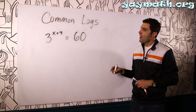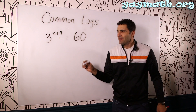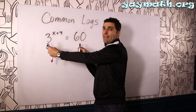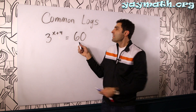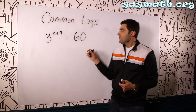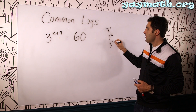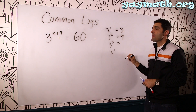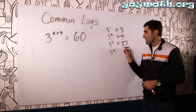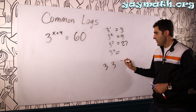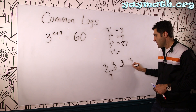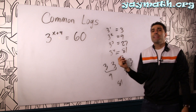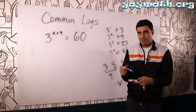Let's do one more problem. Oftentimes you'll see problems like this and they can be a little misleading, but you'll know what to do. The first goal is to see if we can create the same base — let's say base 3. Can we write 60 as a power of 3? Well, 3 to the 1 is 3, 3 squared is 9, 3 cubed is 27, and 3 to the 4th is 81. We're already over 60, so we can't write it in base 3. So we do log of both sides.